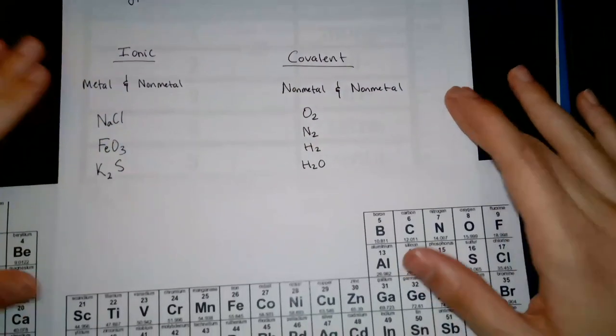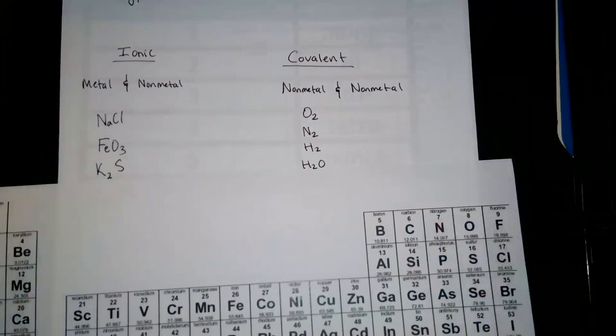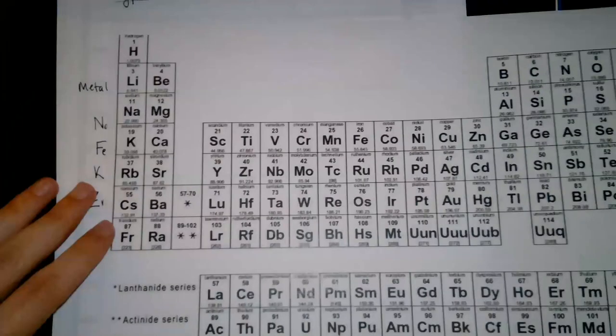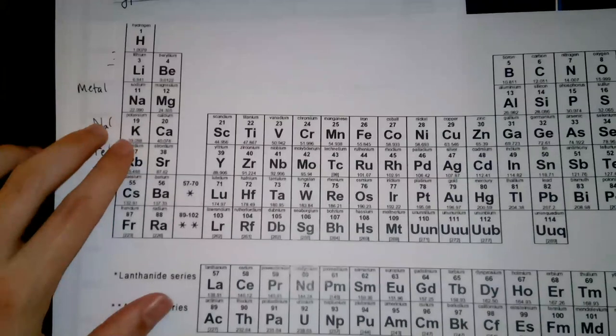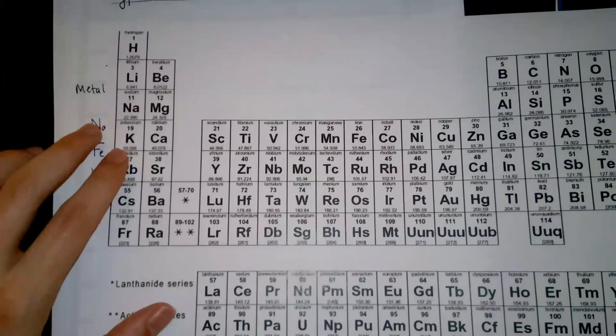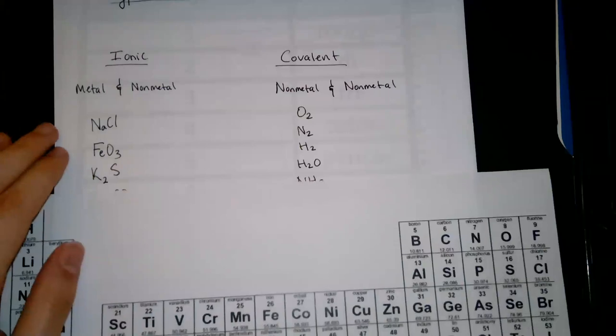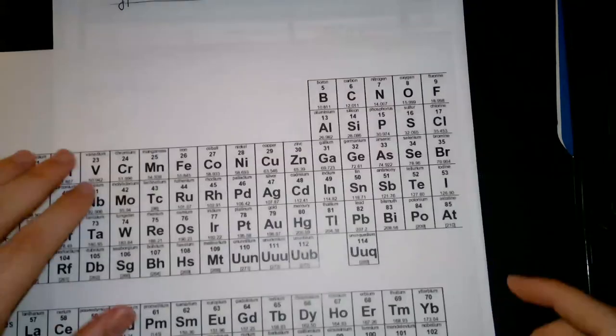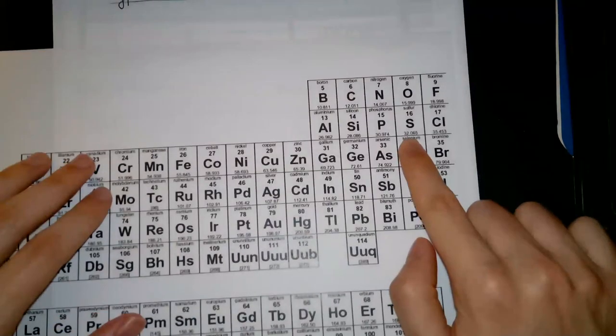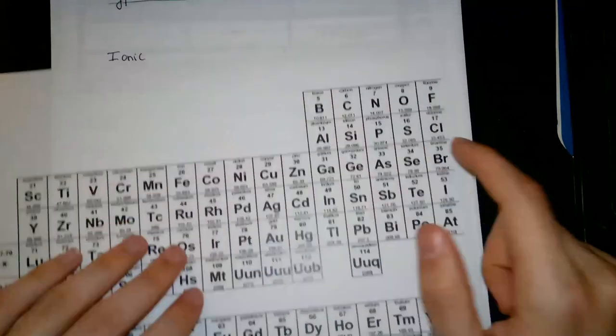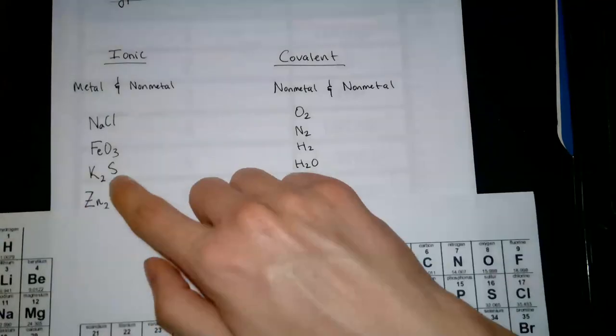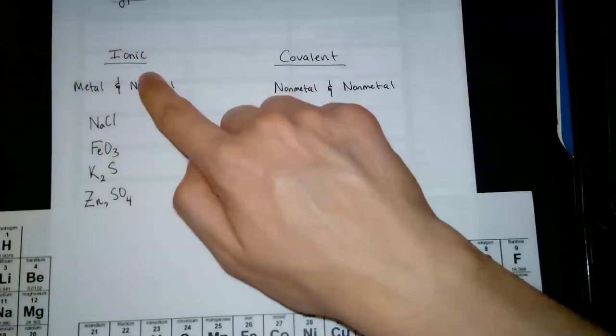And then this one, what is K? Let me go to the table. There it is, K, potassium. It's on the left. It's a metal. What is S? Let me look for it. There it is, it's on the right. Sulfur, non-metal. So metal, non-metal, ionic bond.